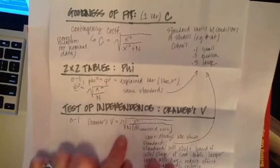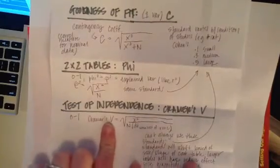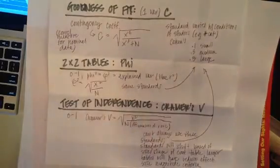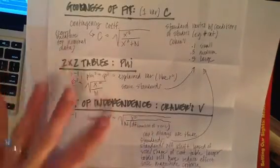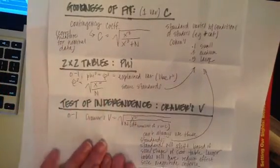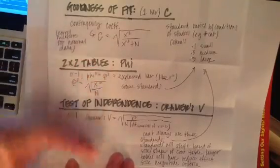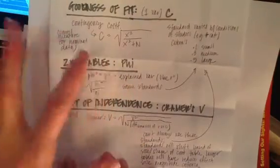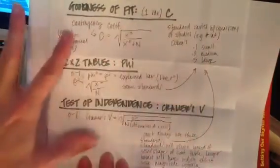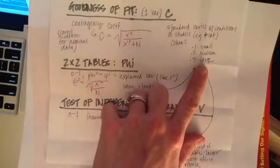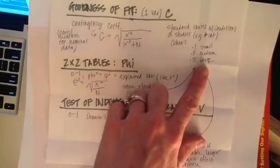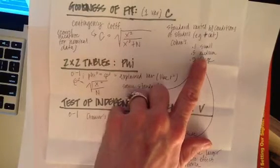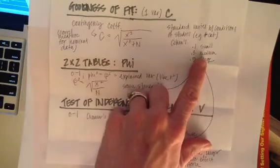Now, here's the hard thing about Cramer's V. When you calculate Cramer's V, you can't always use these same standards up here. The standards actually shift based on the size and the shape of the contingency table, but essentially larger tables will actually reduce the effect size magnitude criteria. So if you have a really large contingency table, then a large effect size might be as small as 0.3, whereas for a smaller contingency table, an effect size of 0.3 would actually only be a medium size effect size.